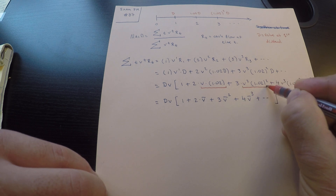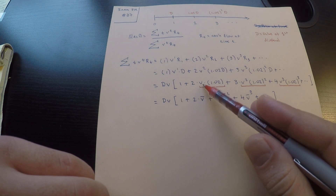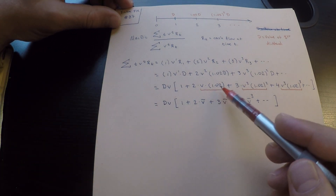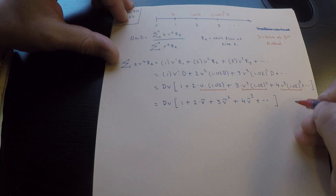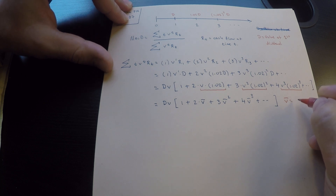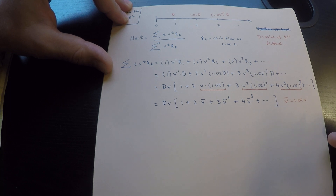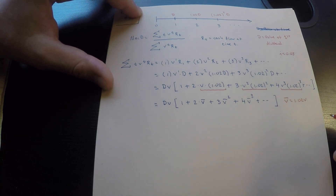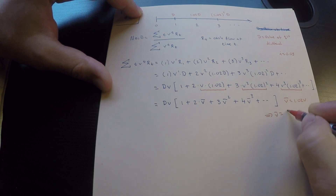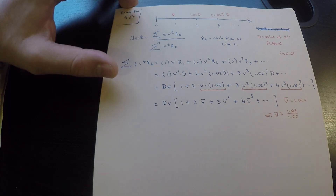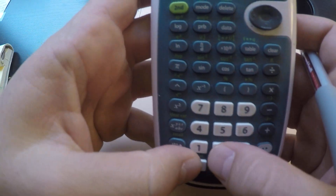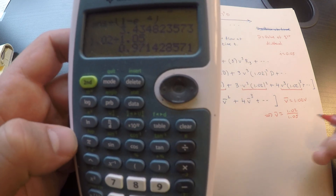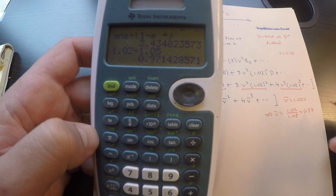The motivation for factoring out V is that the powers of V and the powers of 1.02 now coincide, so V-bar equals 1.02 times V. Since i is given as 0.05, V equals 1/1.05, so V-bar equals 1.02 divided by 1.05, which is approximately 0.9714. Note that V-bar must be less than 1, and indeed 0.9714 satisfies that.